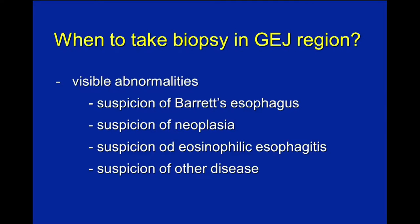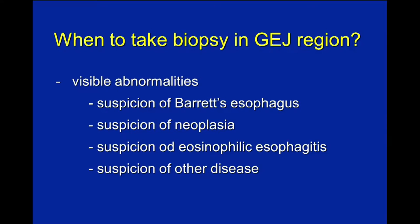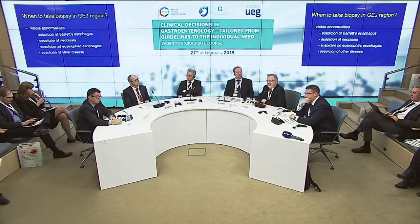When should we take biopsies in this area? Of course, if you have a suspicion of Barrett's esophagus — usually more than one centimeter above the upper limit of gastric folds — or a suspicion of neoplasia, early cancer, or something suspicious, you should always take biopsies. If you have a suspicion of eosinophilic esophagitis, take biopsies in the distal esophagus and higher up, and also in suspicion of other diseases.